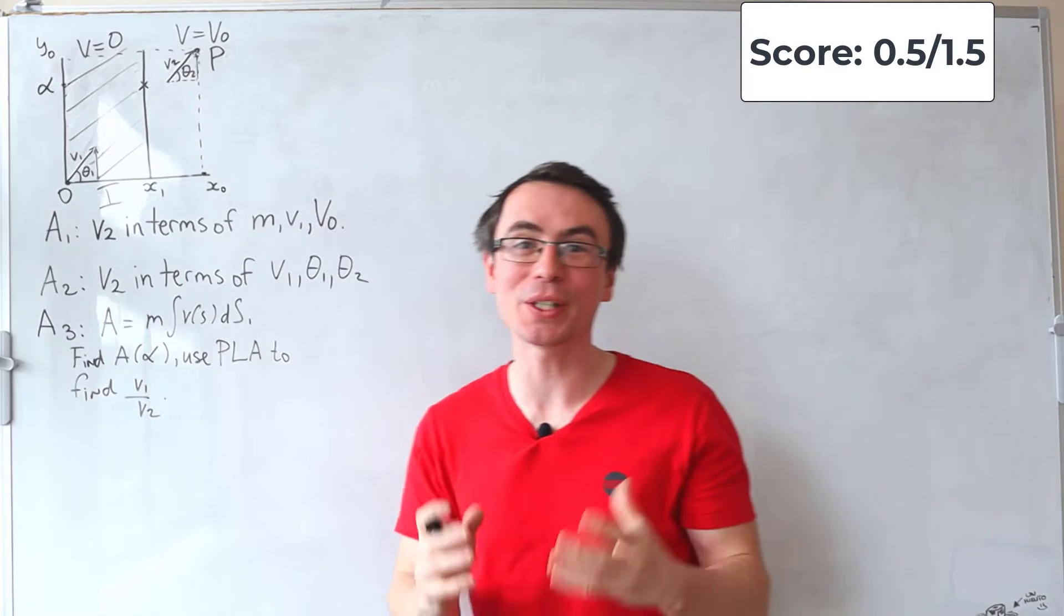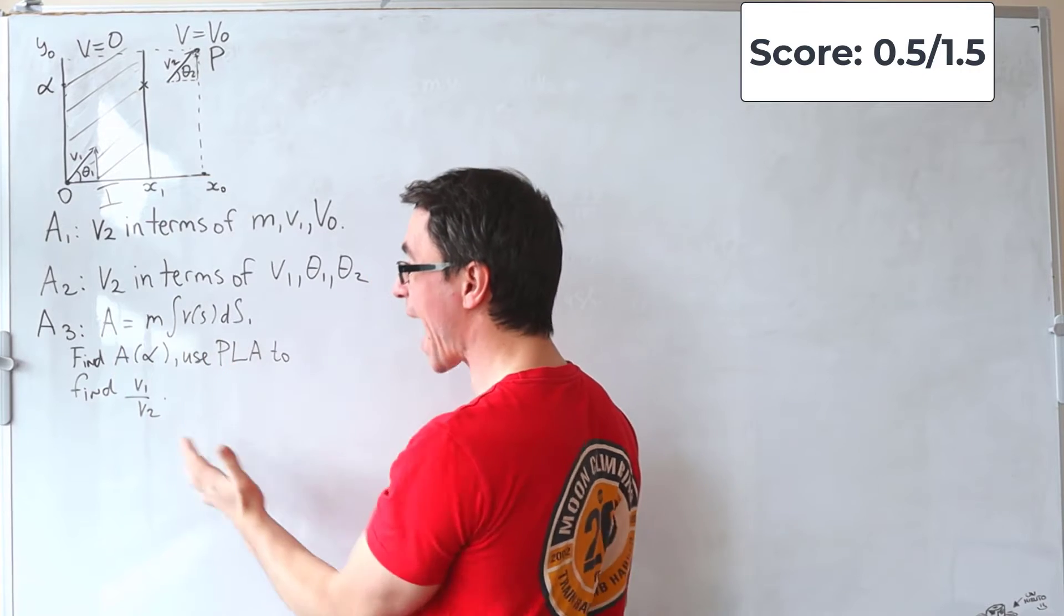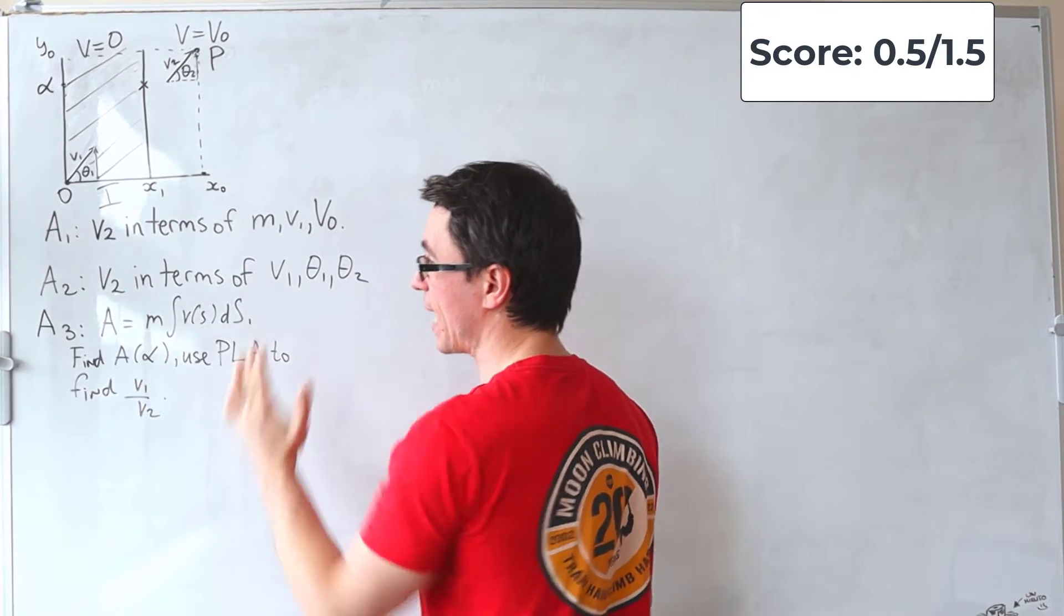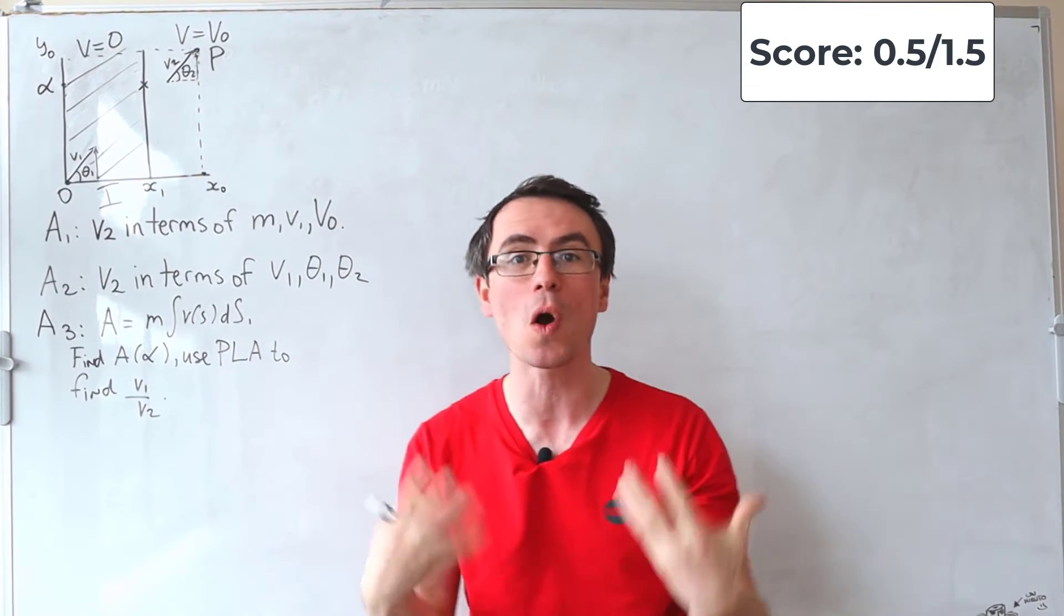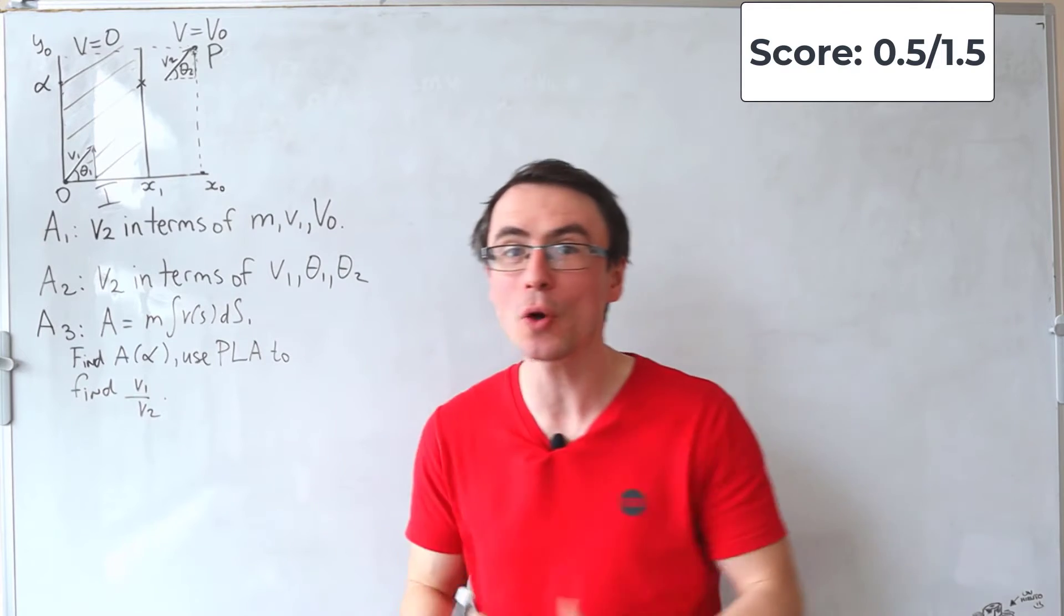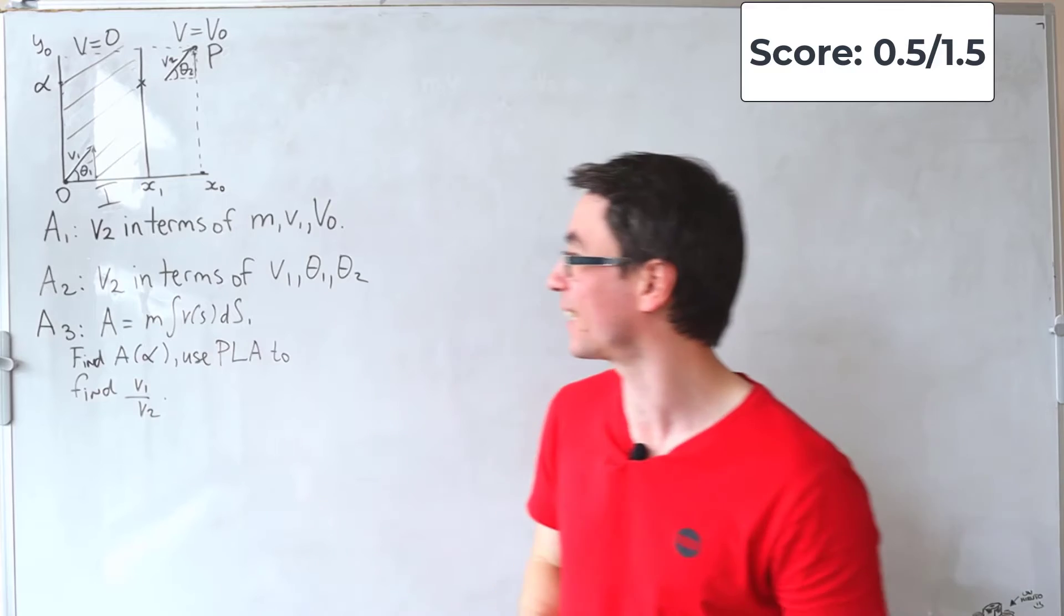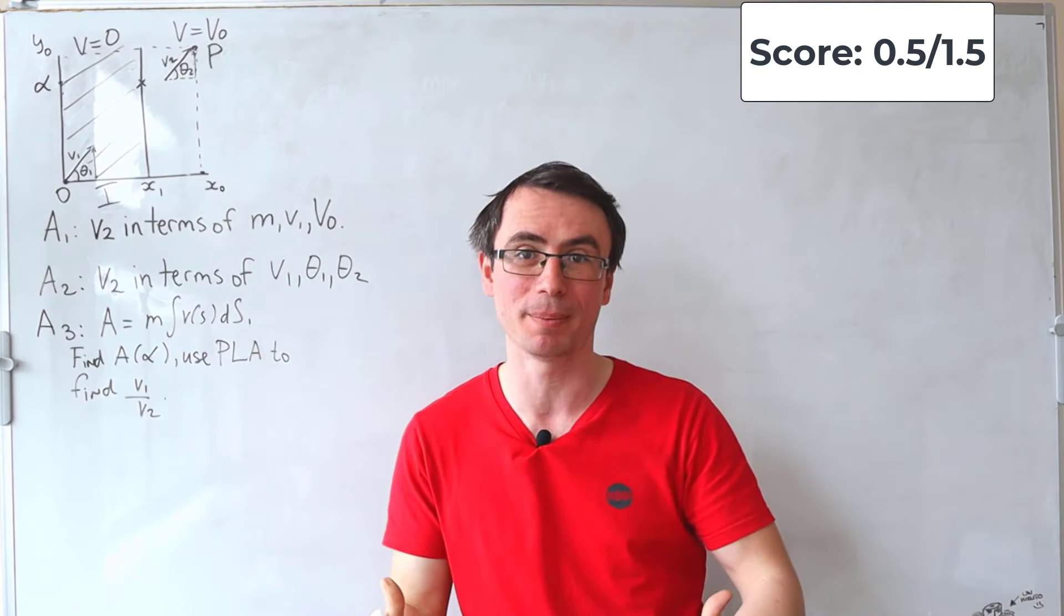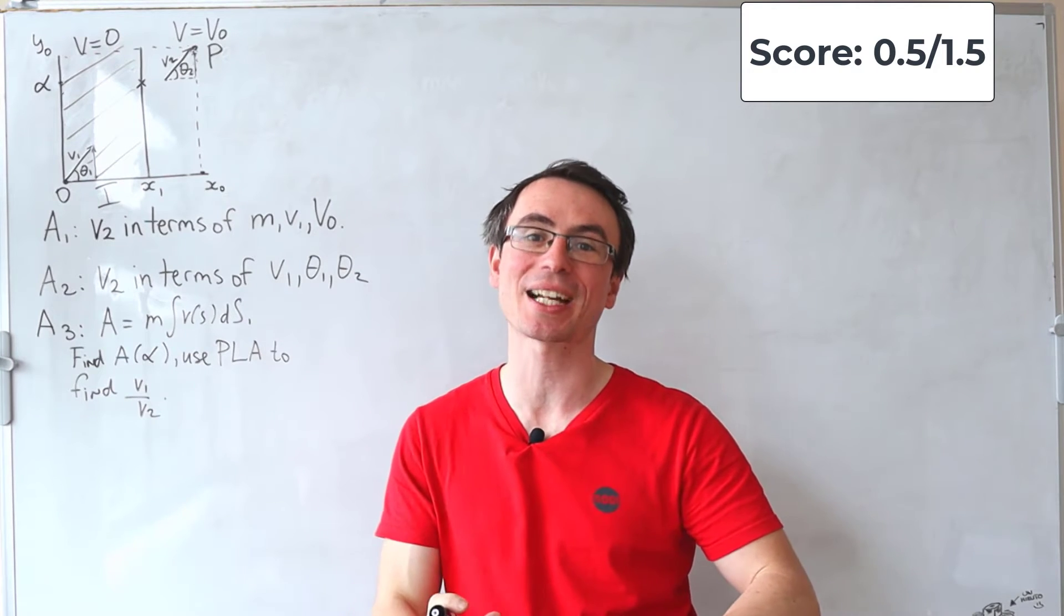Now, the next part is where this problem gets really interesting. We define this quantity, which is known as the action, which is equal to M the integral Vsds. Now, this is a line integral along a path. For a particle with a constant energy, we can actually show that out of all the different paths that it can take, the real path that it takes is the one where this quantity A is an extremum. And historically, this is known as the principle of least action.